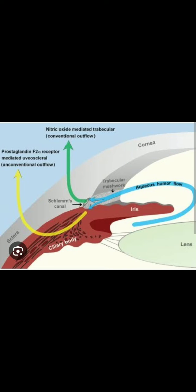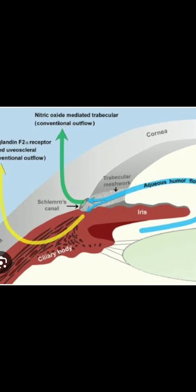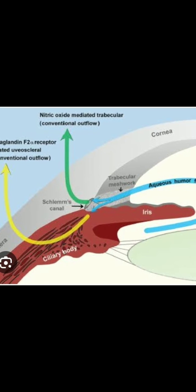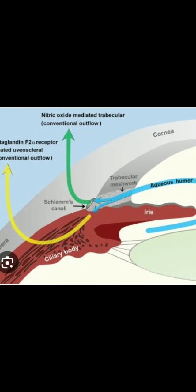The aqueous humor is a liquid in front of the lens. It is a watery liquid, produced by ultra-filtration of plasma from the capillaries present in the ciliary body and also from the ciliary epithelium.